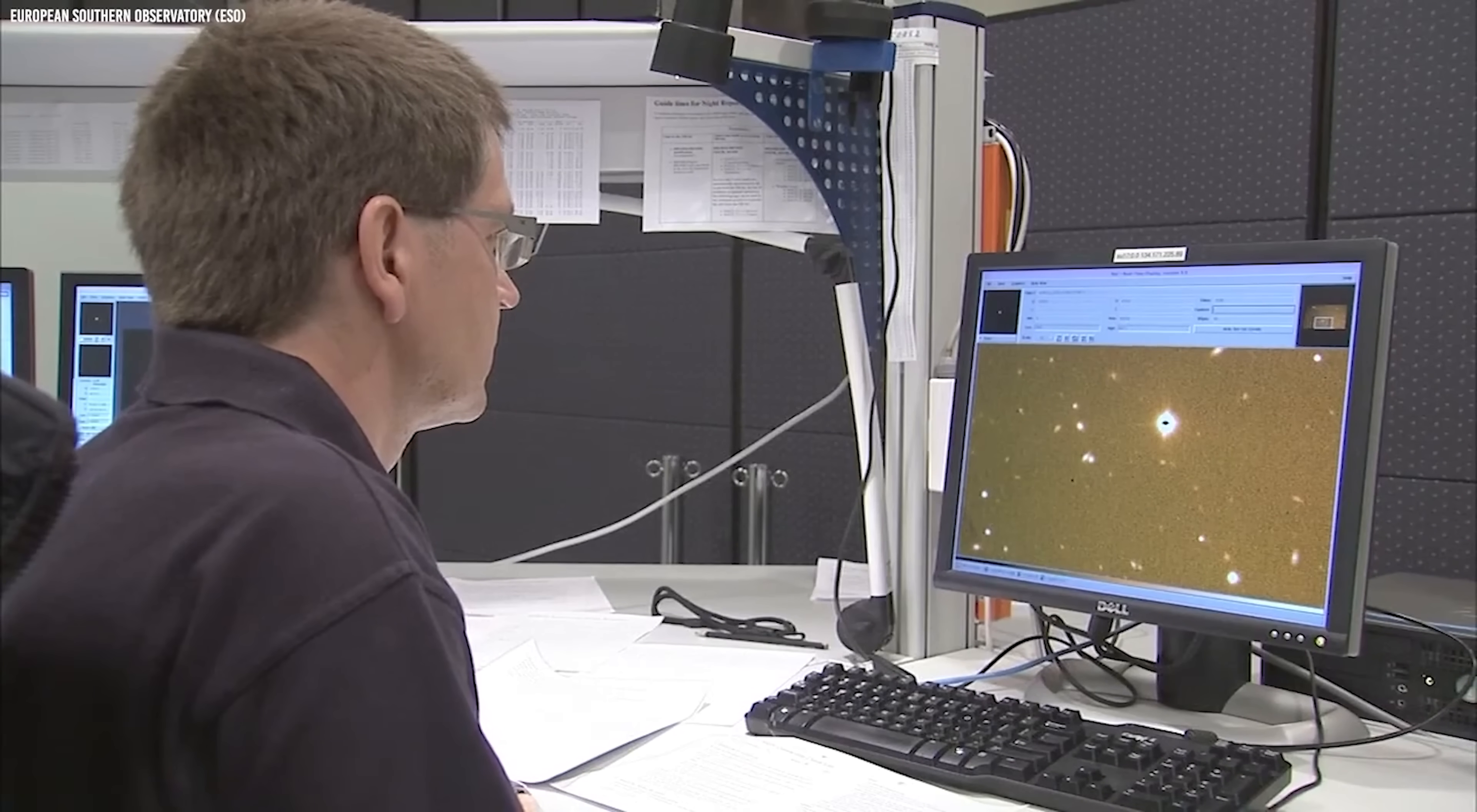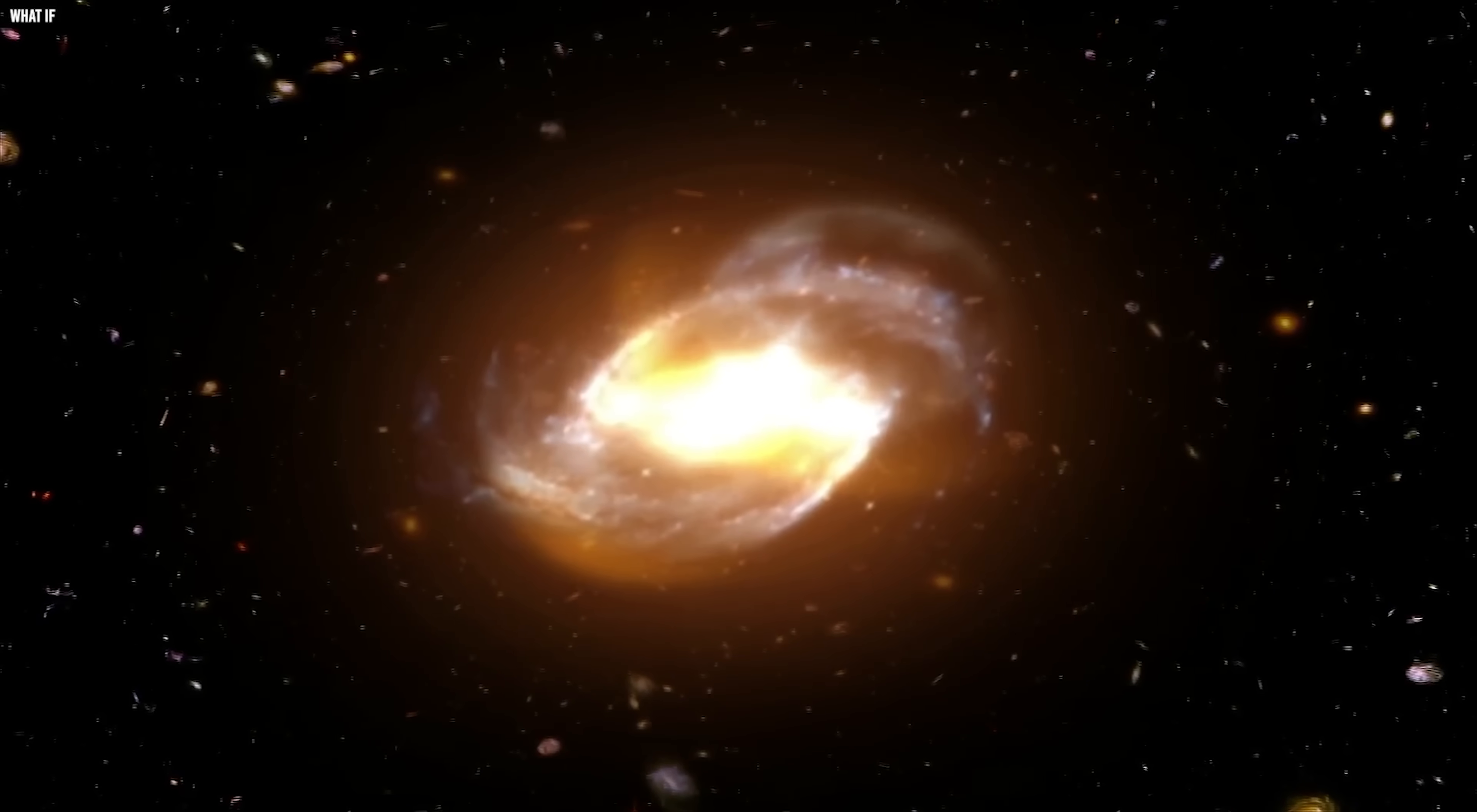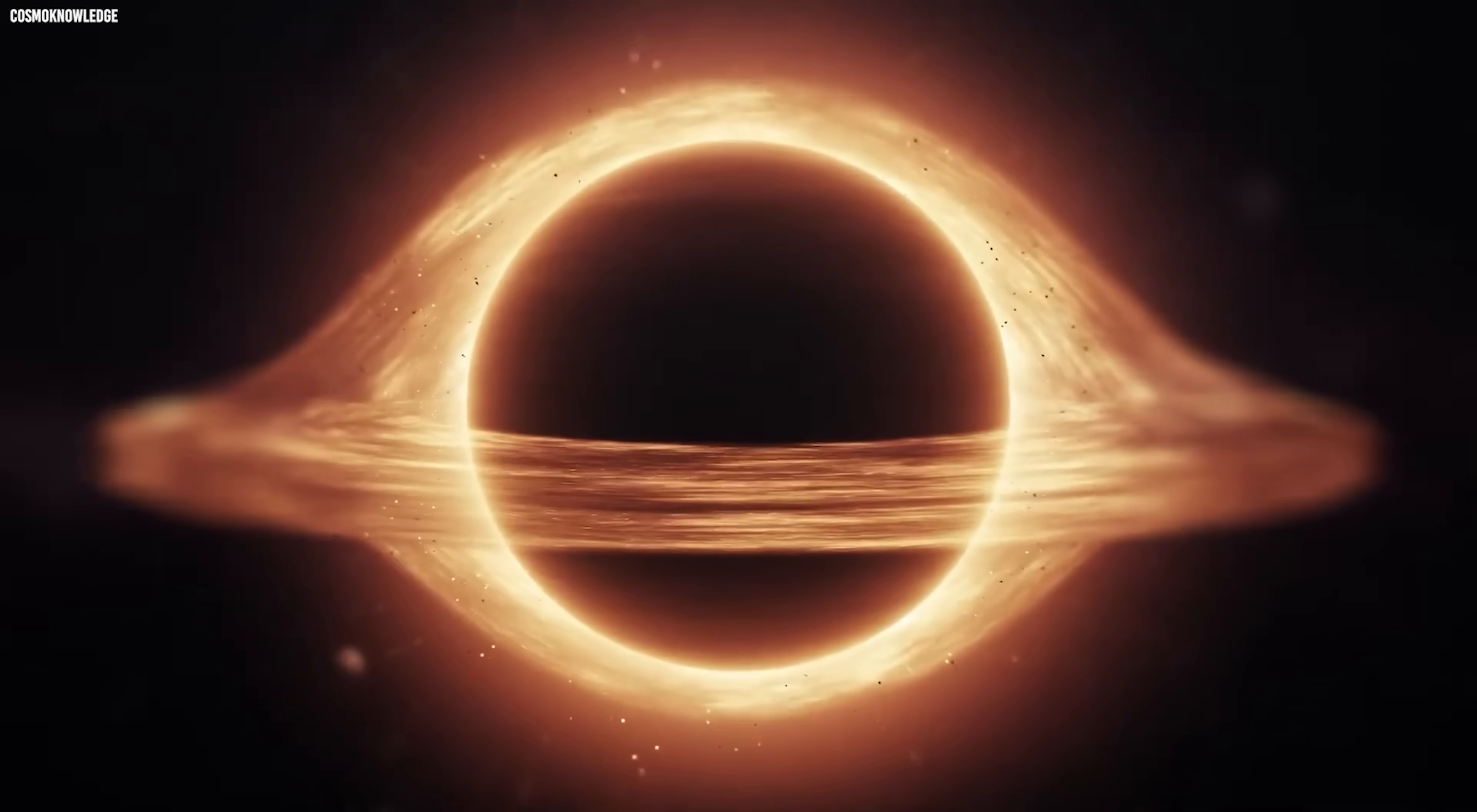The tension between observation and theory grew with each new reading. The accretion disk was faint. The star position showed extreme gravitational curvature. The central region behaved like a single massive point. Every test confirmed the same thing. The black hole was real.